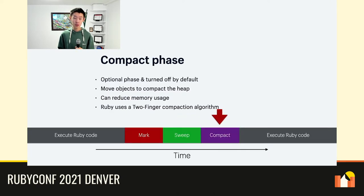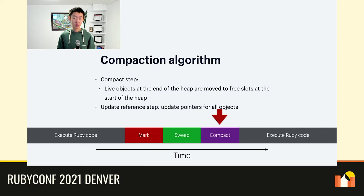Manual compaction was a new feature introduced in Ruby 2.7 and further improved with automatic compaction in Ruby 3.0. However, this feature remains optional and is turned off by default. Compaction moves objects within the heap to the start of the heap, which has several benefits including reduced memory usage, faster garbage collection, and better copy-on-write performance. Ruby uses the two-finger algorithm for compaction. The compaction algorithm involves two steps: the compact step and the reference updating step.